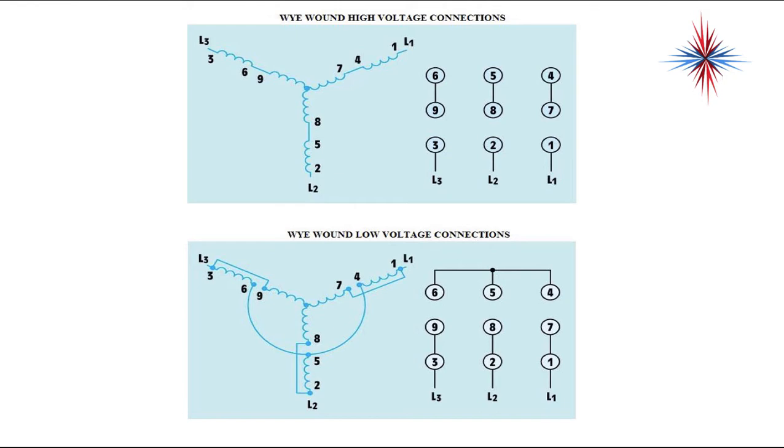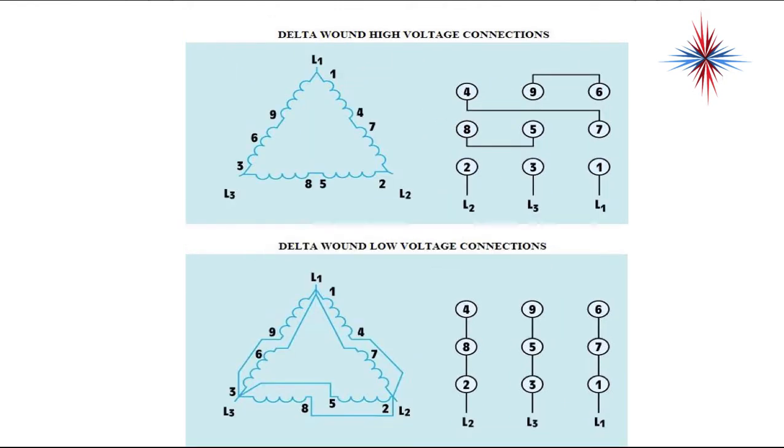These are industry standard. For delta-wound high voltage connections, you're going to wire 5 and 8 together, 4 and 7, and 9 and 6. For delta-wound low voltage connections, you're going to connect 2, 8, and 4; 3, 5, and 9; 1, 7, and 6. And it tells you how you're going to connect your L1, L2, L3.